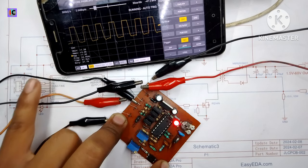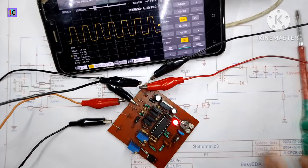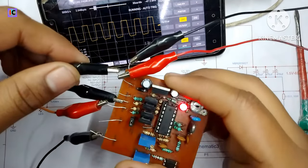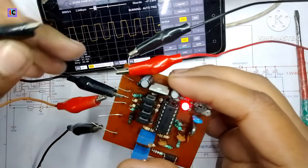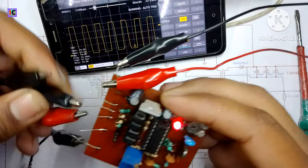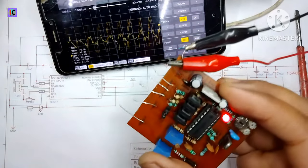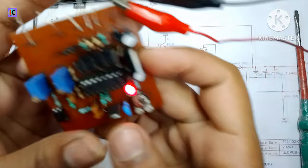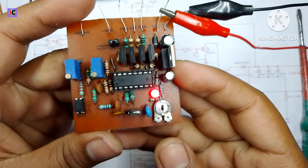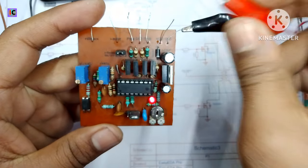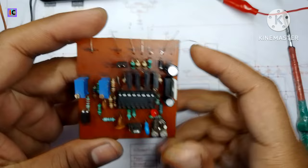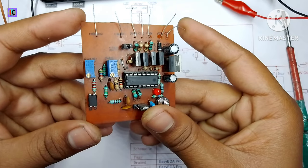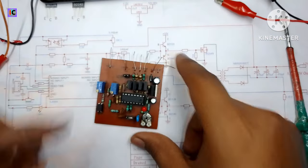This is the first part of this video. In the next upcoming video I will make the buck and boost converter using this TL494-based module. The circuit diagram and PCB files are given in the description. Please like, share, and subscribe to my channel. Thank you for watching.